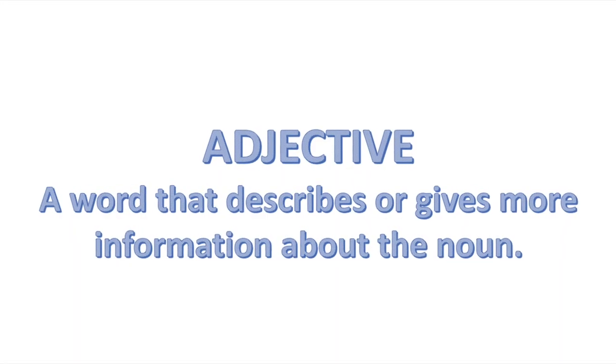Our next question is: what is an adjective? I'm going to give some examples and you see if you can work it out. Happy, proud, excited, curious, red, fluffy. Did you get it right? Adjectives are words that we use to describe our nouns. So we could have the hard table or the happy teacher — those are two examples of describing a noun using an adjective.